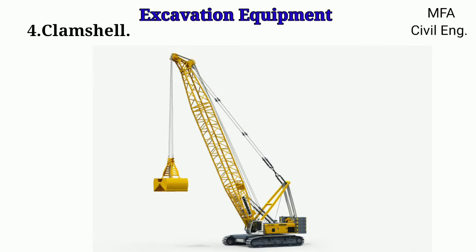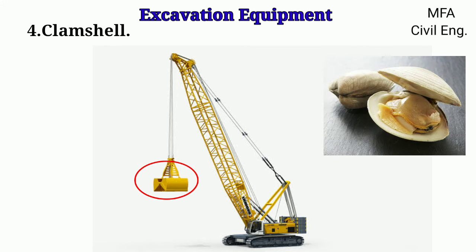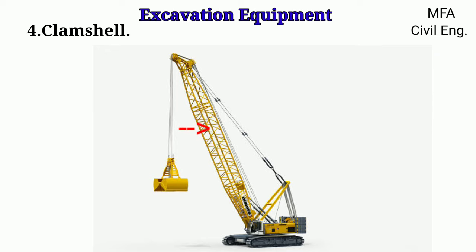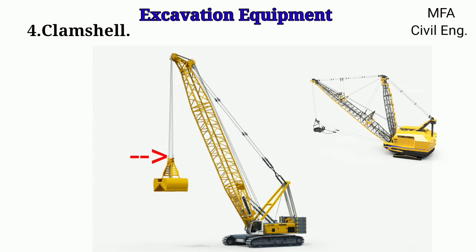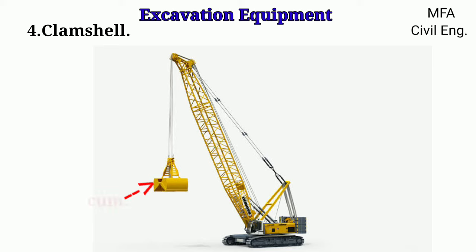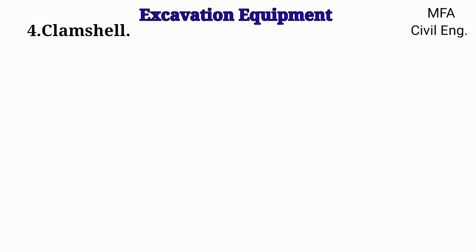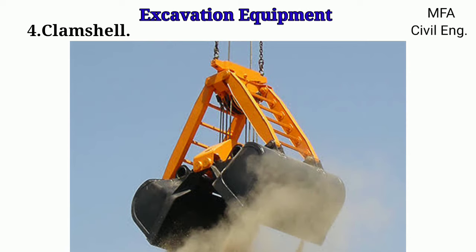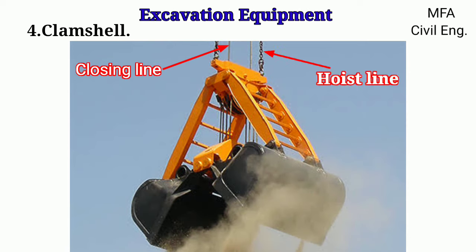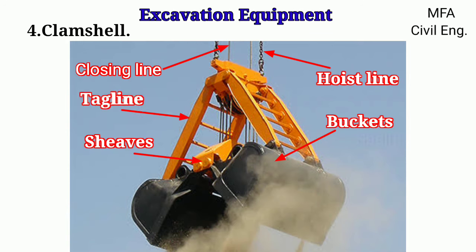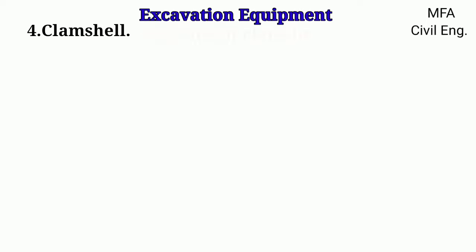The clamshell is named due to the similarity of its bucket to a clam, which is like a shellfish with a hinged double shell. The front end is essentially a crane boom with a specially designed bucket loosely attached at the end through cables, as in a dragline. The capacity of a clamshell bucket is usually given in cubic meters. The basic parts of the clamshell bucket are the closing line, hoist line, sleeves, buckets, tag line, shell, and hinges.